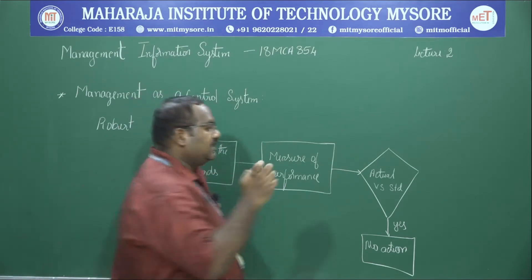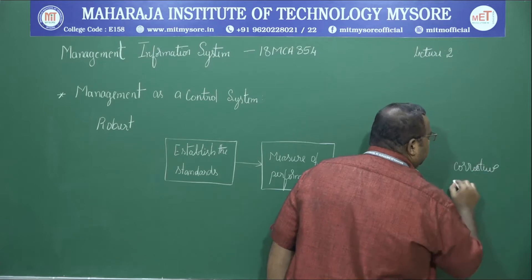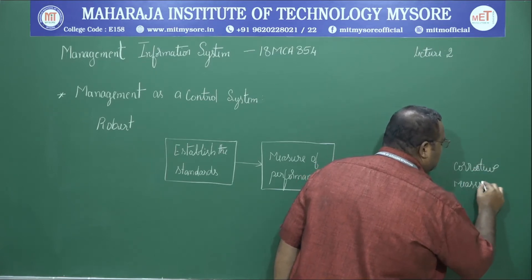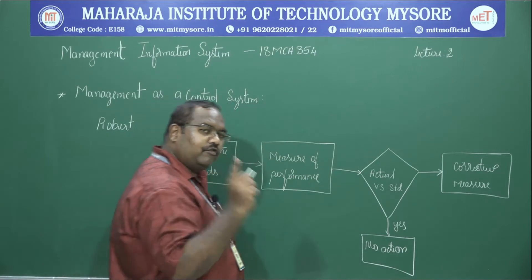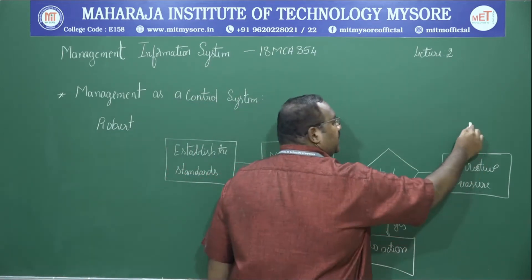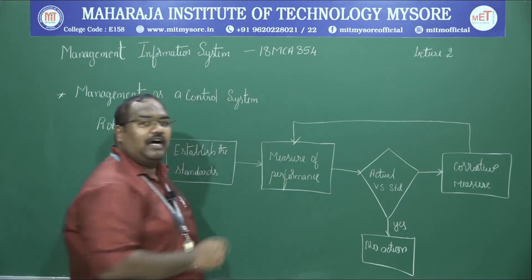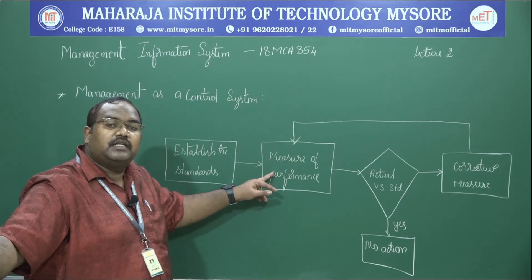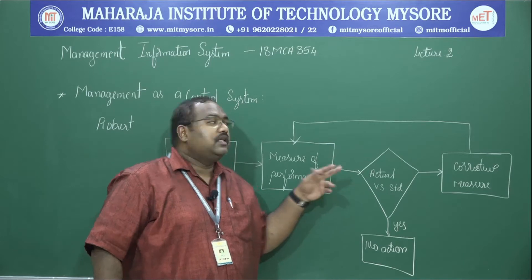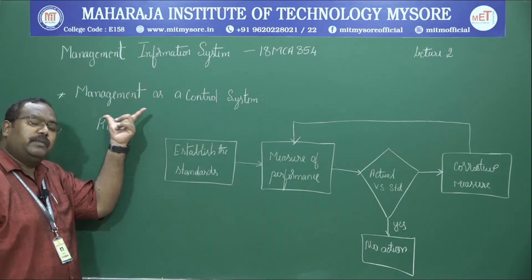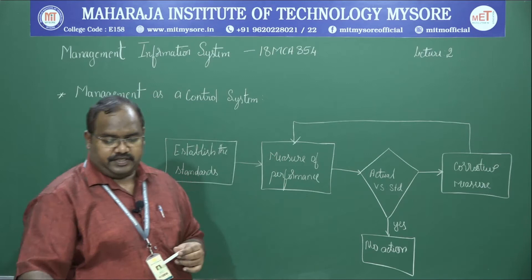If the actual value is not up to the standard — if there is a deviation — then corrective measures have to be taken. The whole process has to be redone, and after doing it, it should be measured again. The values should be taken and compared again until the standard is matched. This is the concept of management as a control system: it needs to keep refining until the optimal standard value is reached.